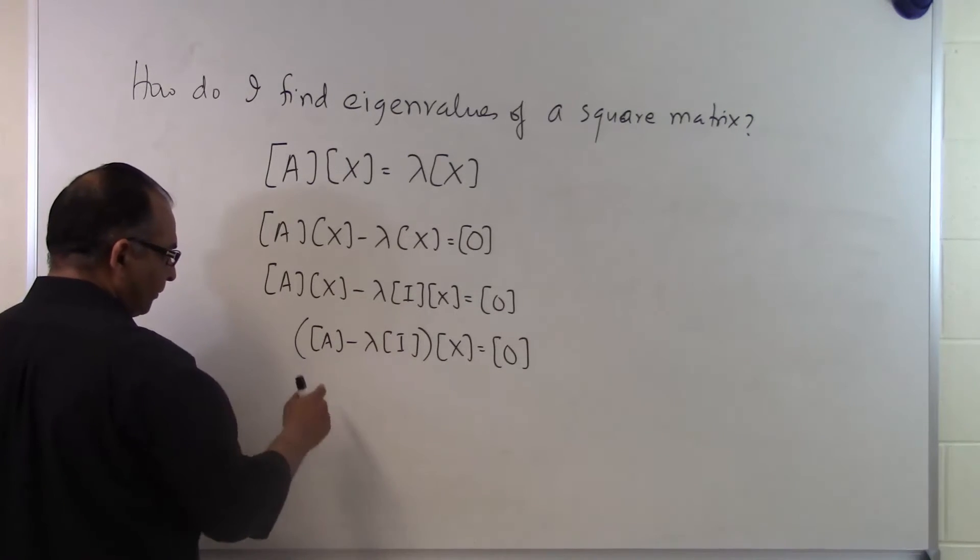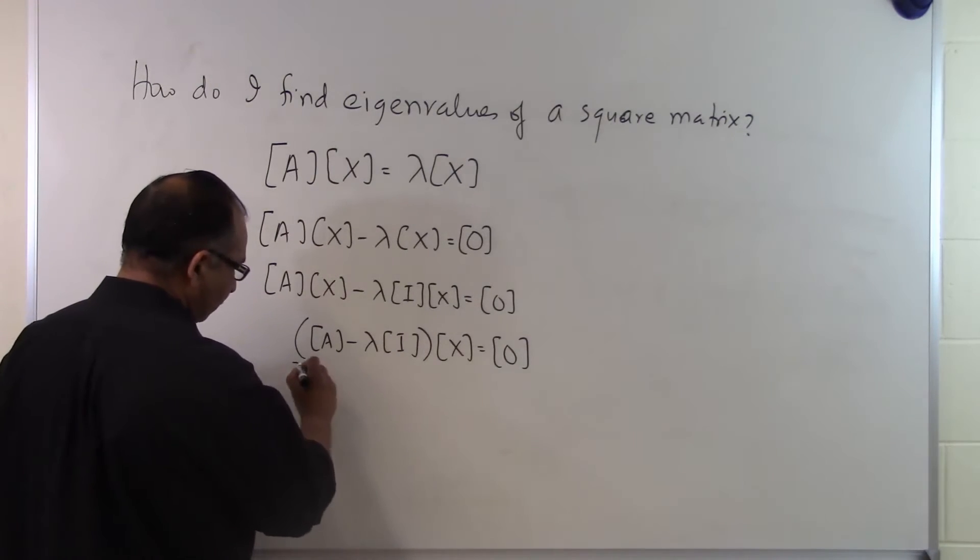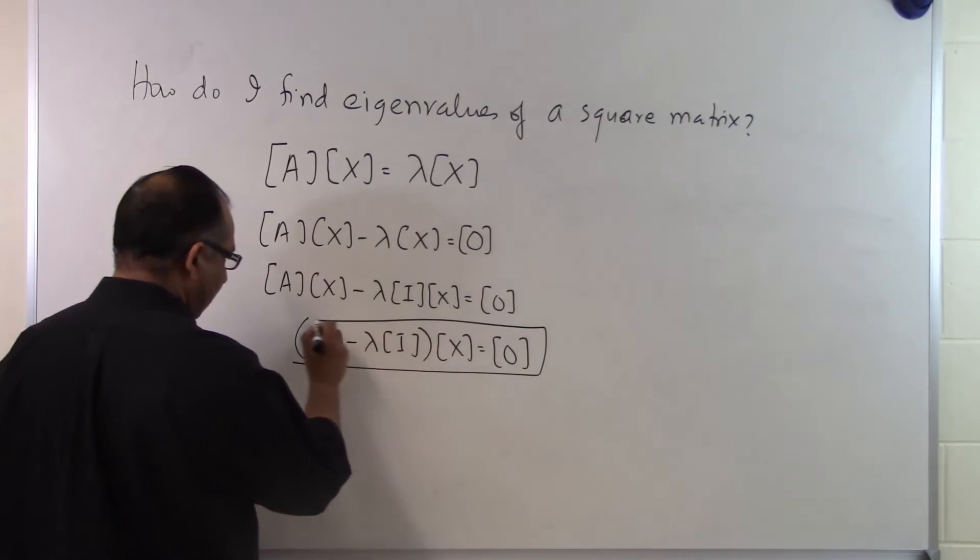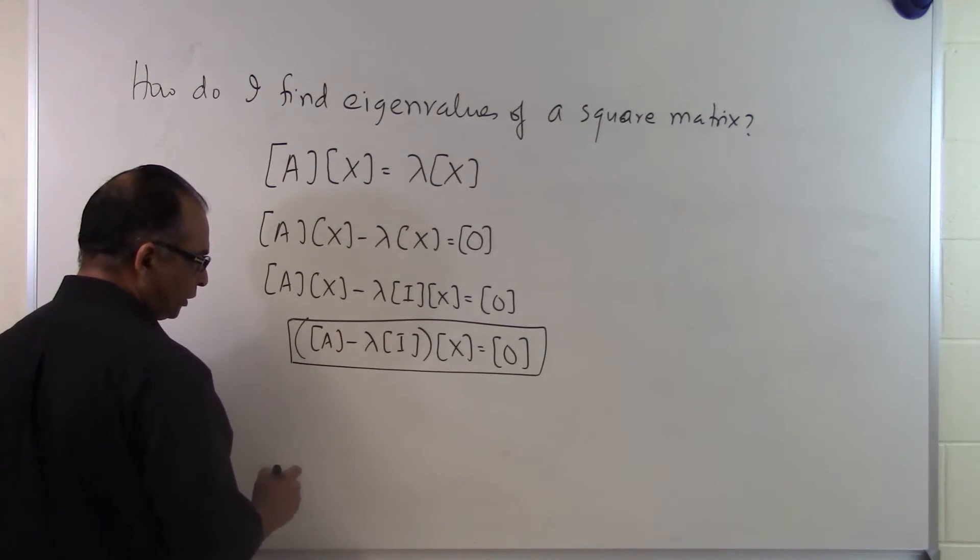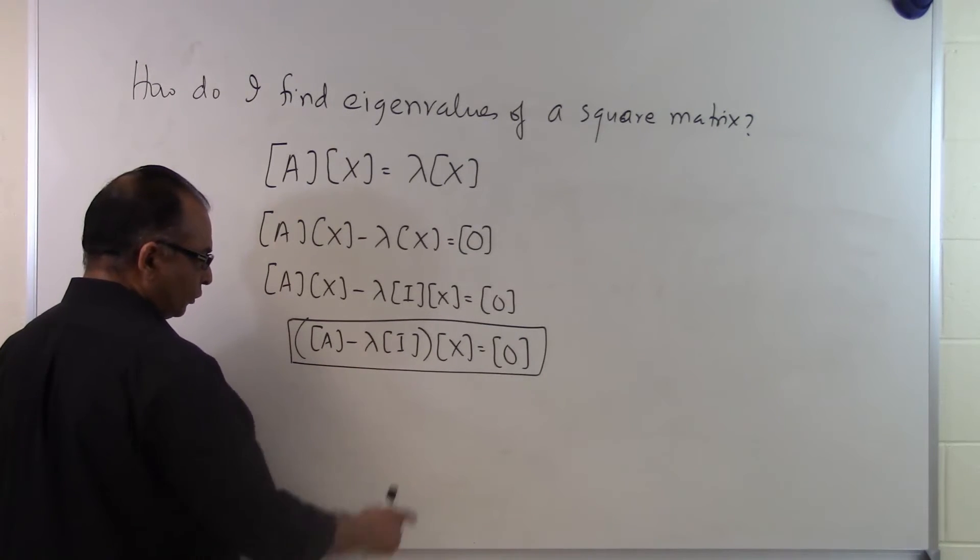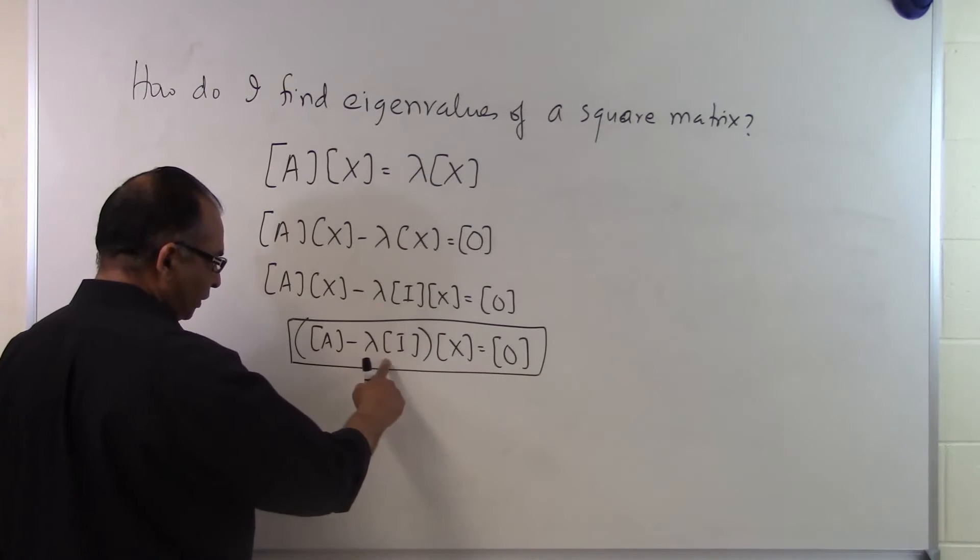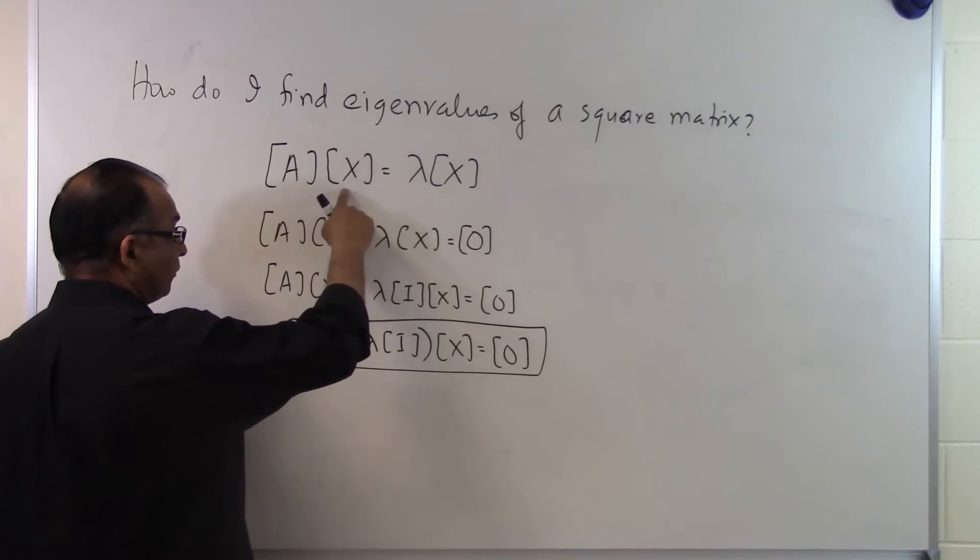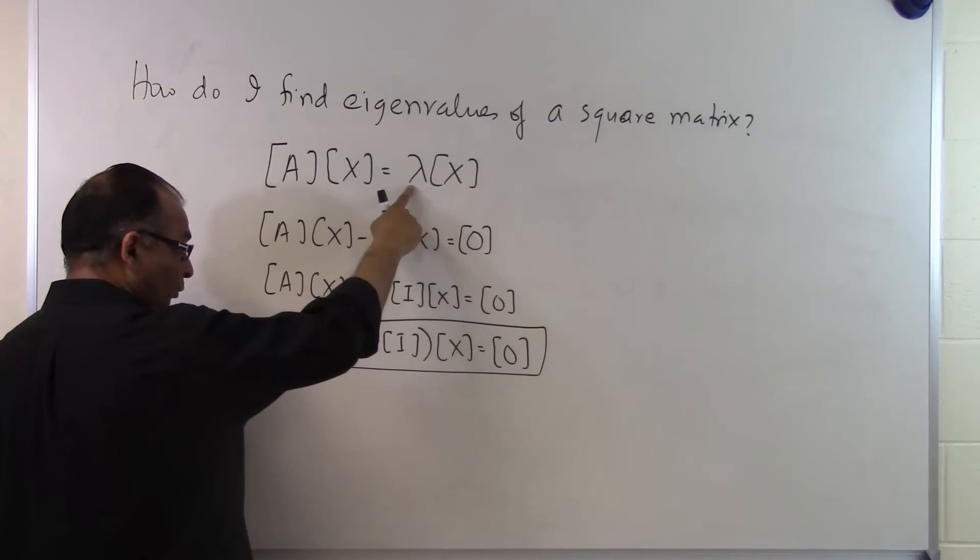So if you look at this particular set of equations, if somebody says I gave you a set of equations for which the right-hand side is zero, one of the solutions is zero itself. So x equal to zero is a solution to this set of equations. But what we started with was that x has to be non-zero so that we can call this lambda an eigenvalue.